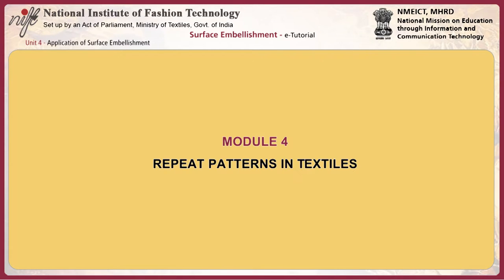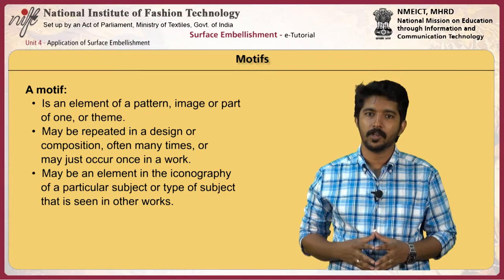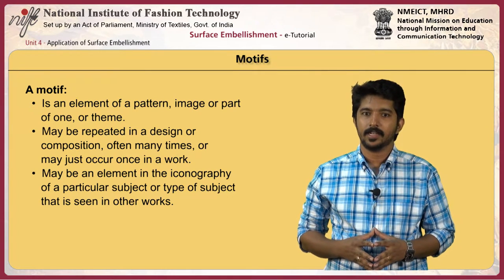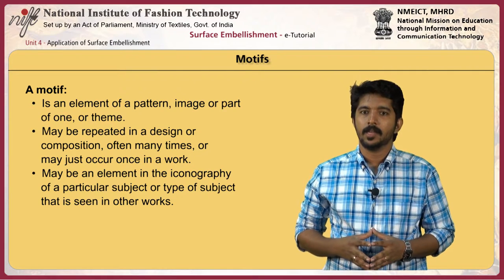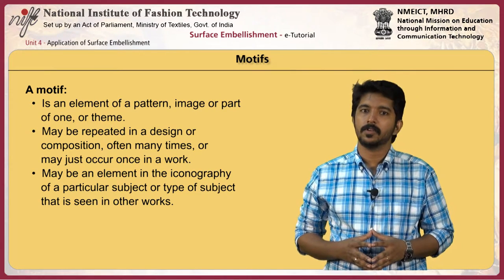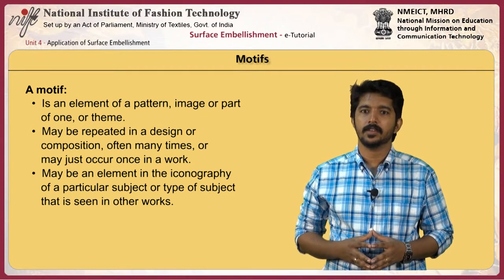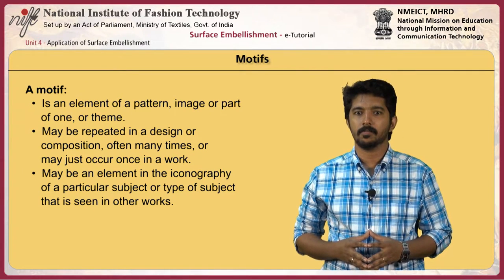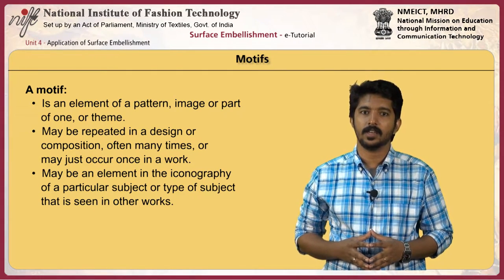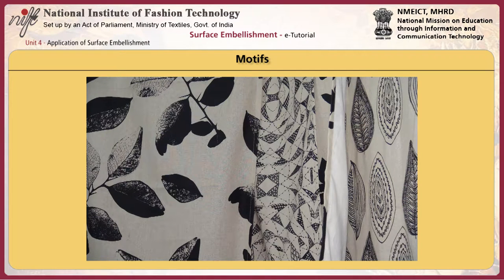This module covers repeat patterns used in textiles. A motif is an element of a pattern — an image or part of one, or a theme. It may be repeated in a design or composition many times, or may just occur once. It may be an element in the iconography of a particular subject. Ornamental or decorative art can usually be analyzed into a number of different elements called motifs, which may often be repeated many times in a pattern, as in textiles.